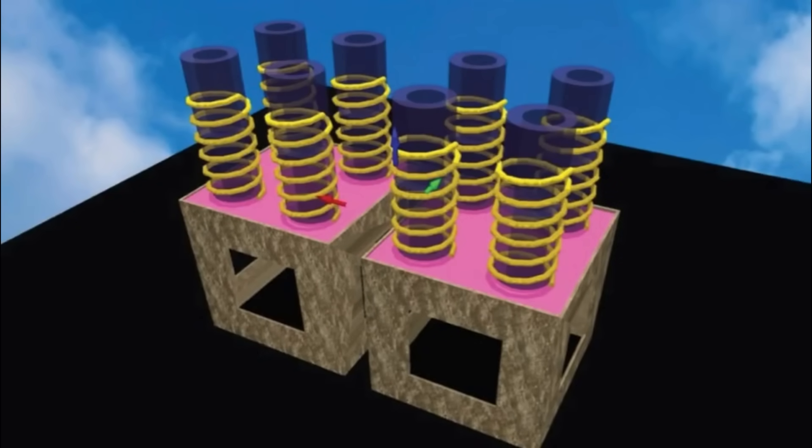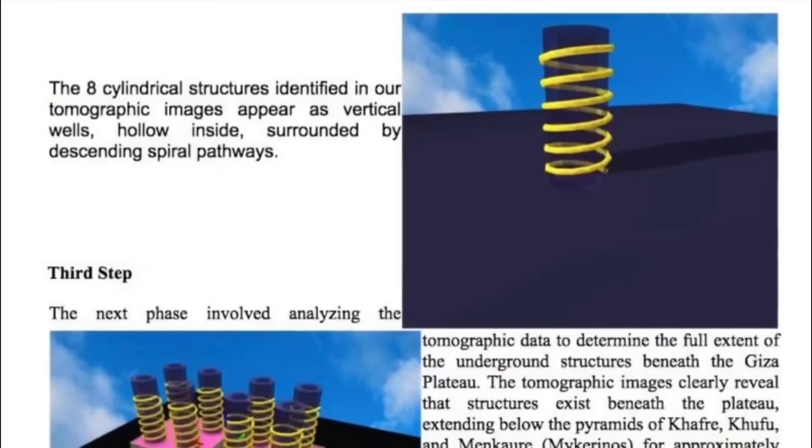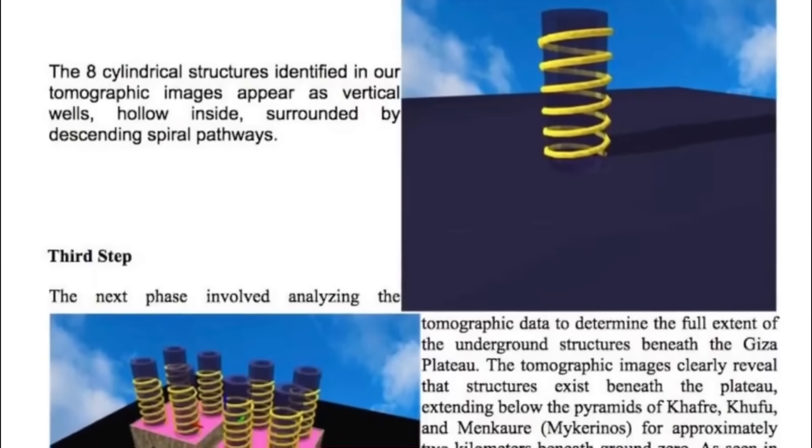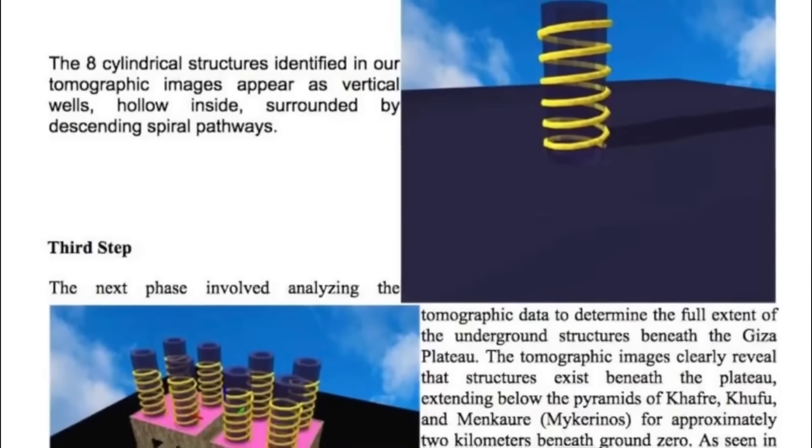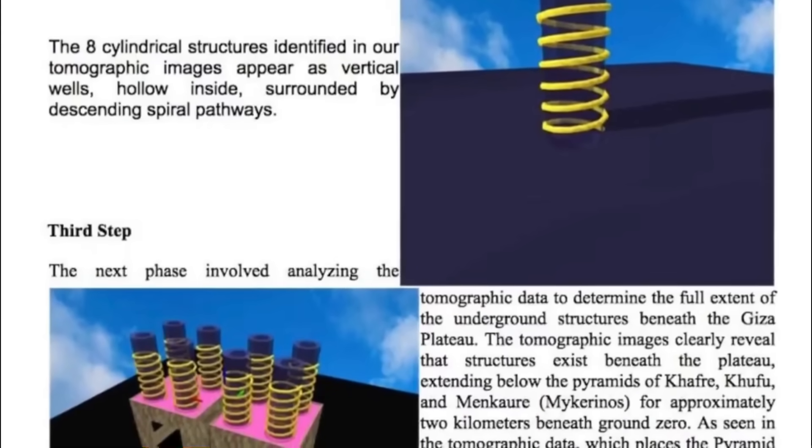The paper then adds to that with some even more interesting detail, which is that the eight cylindrical structures that have been identified in the tomographical image appear as vertical wells, which are hollow inside and surrounded by descending spiral pathways.